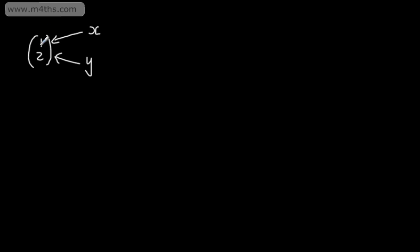If we're translating a shape, we're simply moving it. Often we're given a vector. So for example, I might be given the vector (1, 2). The top number tells me what to do in terms of the x-coordinate, and the bottom number tells me what to do in terms of the y-coordinate. If this number is positive, we're going to move to the right. If it's negative, we're going to move to the left. The bottom number tells me the y-coordinate — so this is horizontal movement and this is vertical movement. If we have a negative, we will be moving it down. If we have a positive, we will be moving it up.